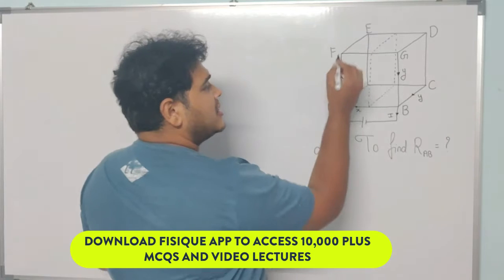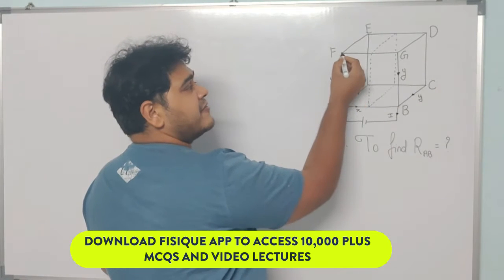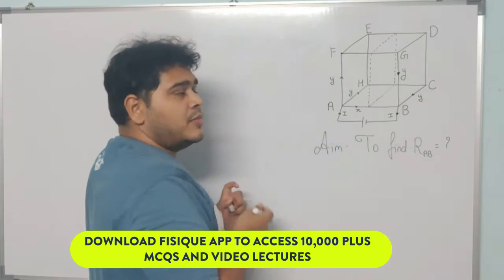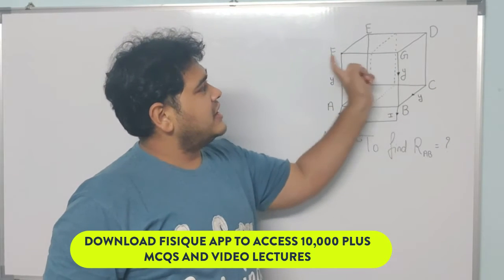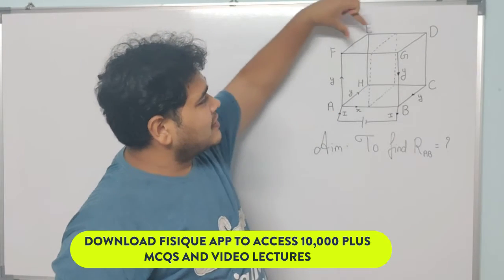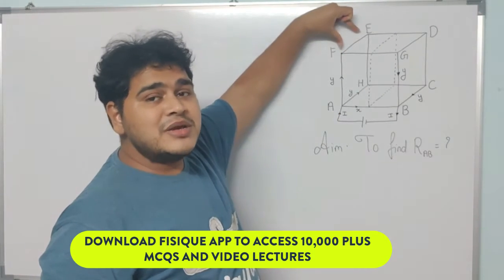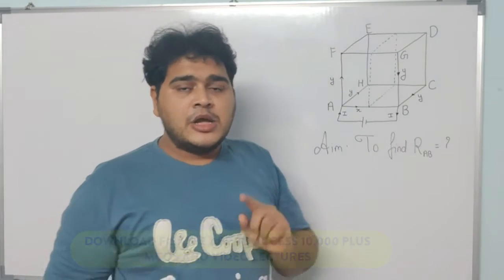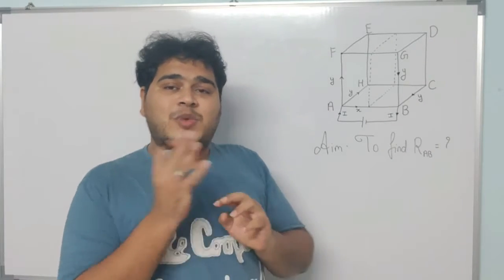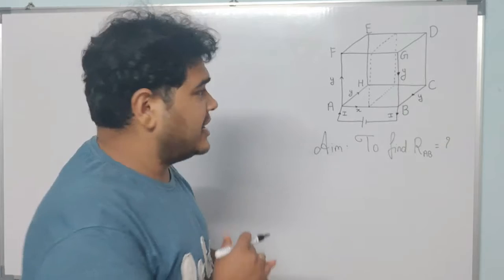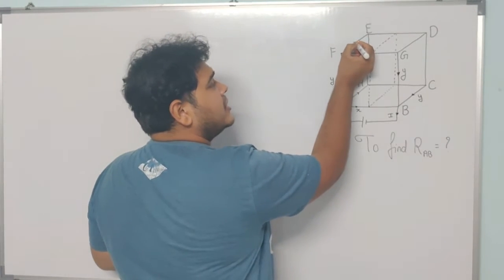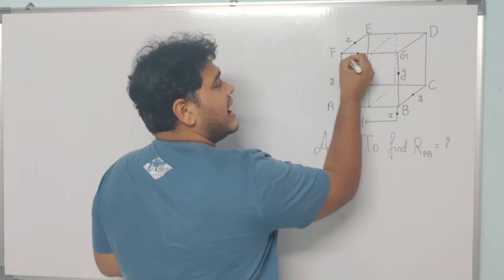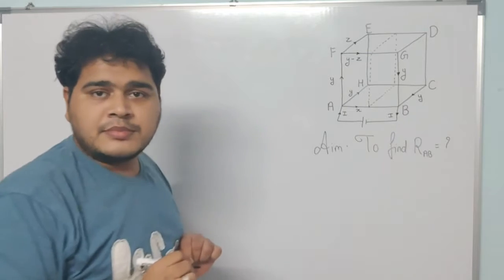When current y reaches point F, it will split between FG and FE. However, FE and FG are not symmetrical — FE and DG are mirror images of each other, but FE and FG are not. So we cannot divide current y into two equal parts of y/2. Instead, we assume the current going from F to E is z, so the remaining current going from F to G is y minus z.